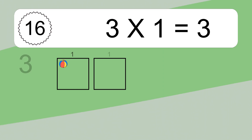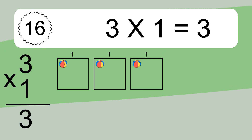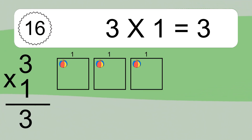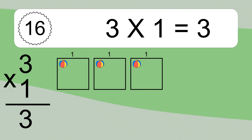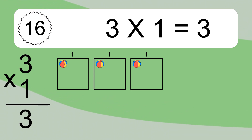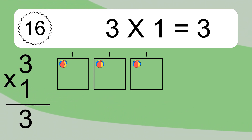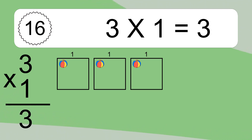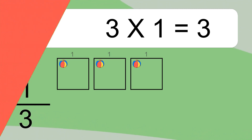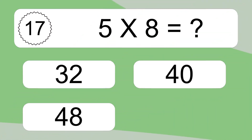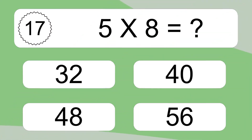3 times 1 equals what? 3 times 1 equals 3. We have 3 boxes, and each box has 1 colorful ball inside. If you count all the balls in all the boxes together, you will have 3 times 1 balls. This equals 3 balls.